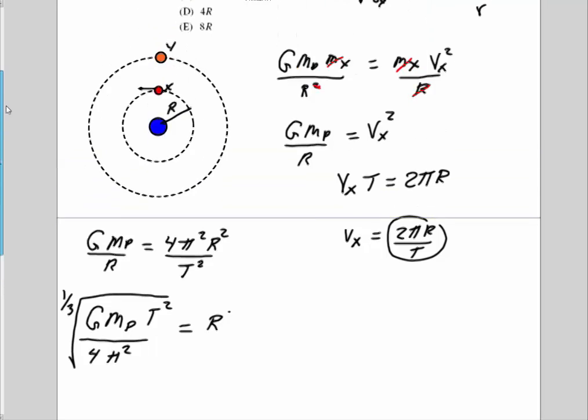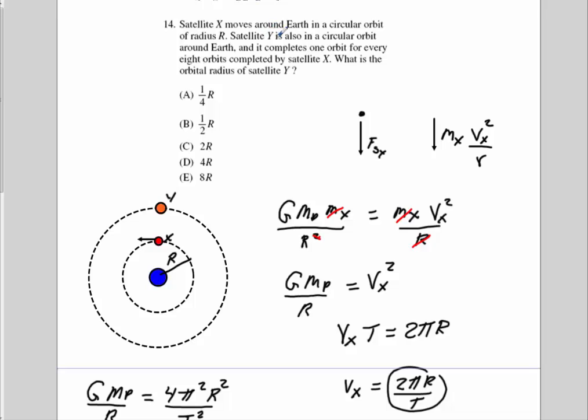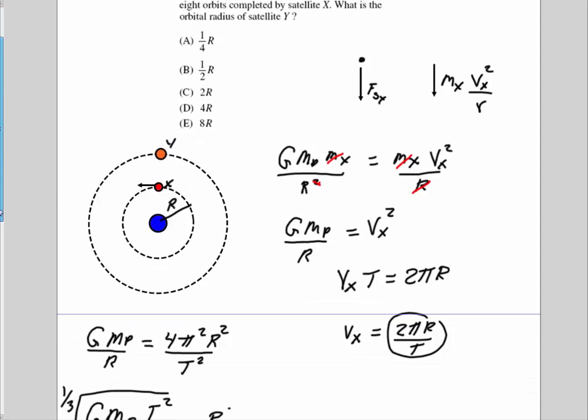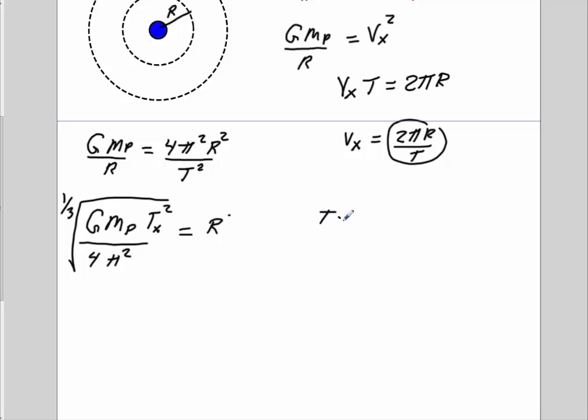Now we go back, and it says satellite Y completes one orbit for every eight orbits completed by satellite X. X is going around this thing eight times for every one time that Y goes. So we can say T_Y is equal to eight T_X. If it takes the period of X one hour to go around the planet, then it would take T_Y eight hours. We're going to say that G times mass of planet, T_Y squared over 4 pi squared, take the cube root of that, that's going to equal to the radius of Y.